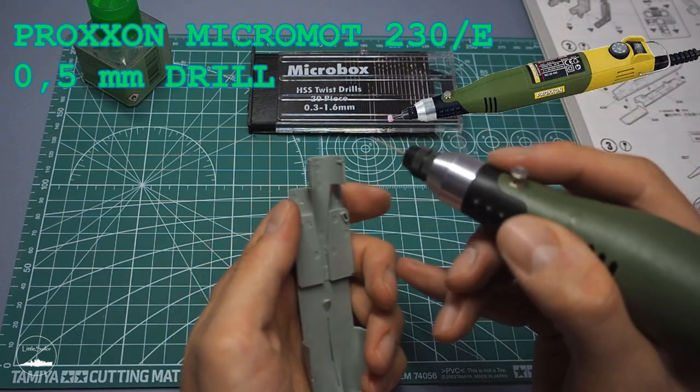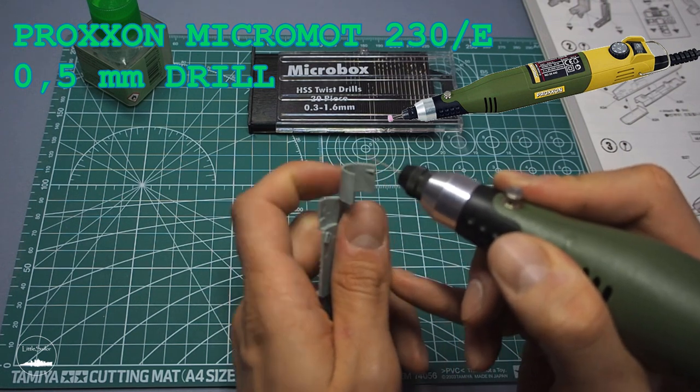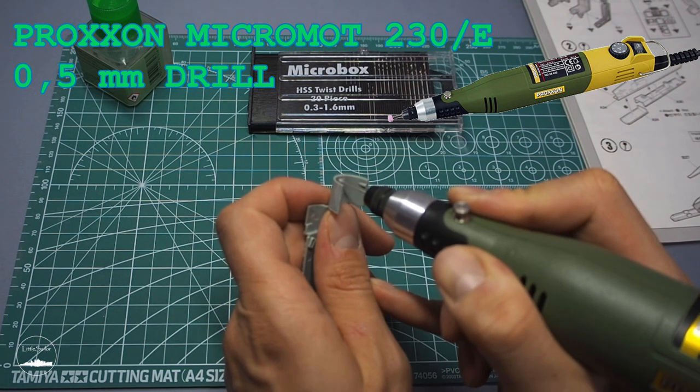At the bottom of the hull I made two holes as per instructions. I used a 0.5 mm drill.